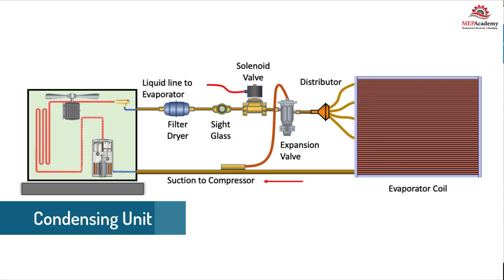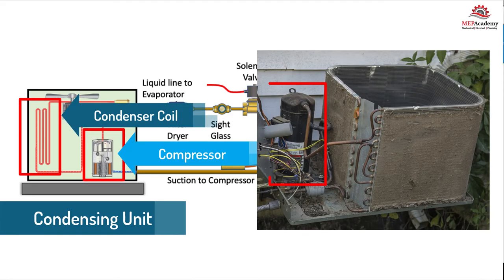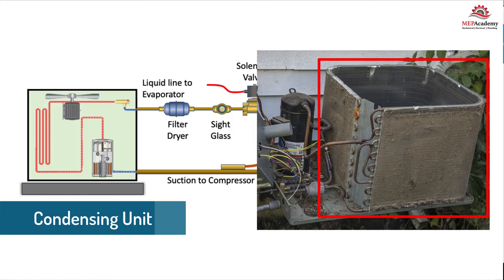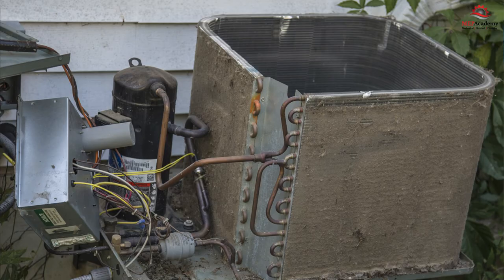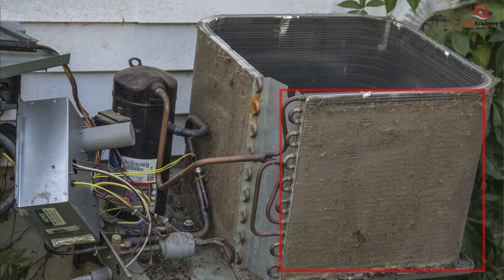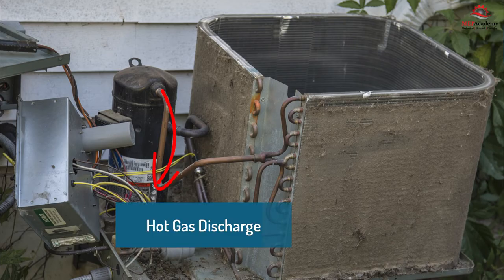The condensing unit contains two major components: the compressor and the condenser coil. The compressor is the heart of the unit and pumps the refrigerant around the piping circuit. The condenser coil provides a means of rejecting the heat to the outdoors using a fan blowing air over a hot coil. In this picture we can see that this condenser hasn't been maintained and is covered with dirt. This will reduce the capacity of the unit, so be sure to check your outdoor coil at least once or twice a year to ensure it's clean. We can see the hot gas discharge piping coming off the top of the compressor and feeding the condenser coil, which is responsible for rejecting the heat from the building.